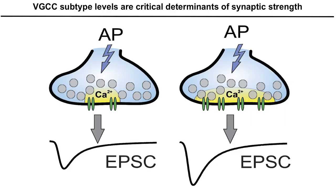A major question for our lab is how do synapses enable neuronal circuits to transmit a wide diversity of information? The magnitude of calcium entry through voltage-gated calcium channels in the presynaptic active zone regulates synaptic vesicle release probability. Therefore, calcium channel levels regulate synaptic strength, which affects synaptic transmission and plasticity, and ultimately neuronal circuit output.